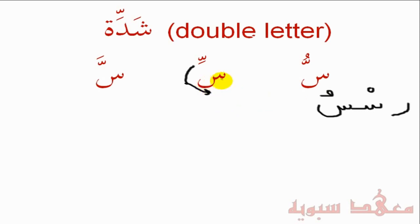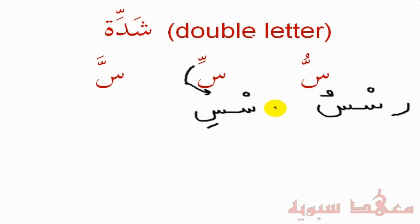To pronounce this, we would say 'Res-su' — notice how I give the double letter its emphasis: Res-su. Similarly, this is two Seens as well: the Sukun is on the first, followed by the Kasra on the second. So if you put the Ra, it would pronounce as 'Res-si' — notice how I give emphasis to the Seen. It's the doubling of the letter: Res-si, not a light single sound.